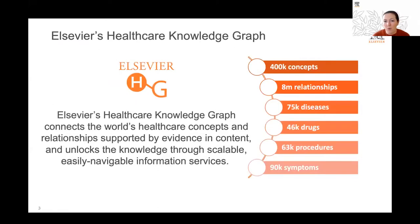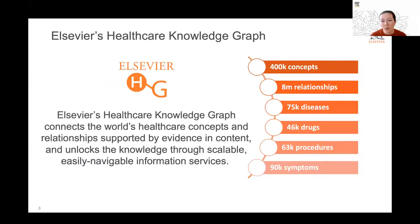Starting with the 30,000-foot view: the Health Care Knowledge Graph, or H-Graph, was launched in 2017 as a way to structure very complex medical information to better serve our customers. Elsevier is a content provider managing hundreds of millions of documents. Using a taxonomy helps make our content machine-readable, and providing relationships between concepts helps us develop intelligent systems that can infer information not directly represented in text. The core of the graph is a medical taxonomy containing over 400,000 concepts, 8 million relationships, and 75,000 diseases.